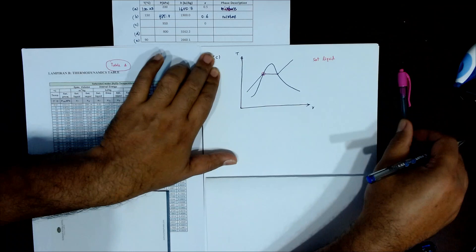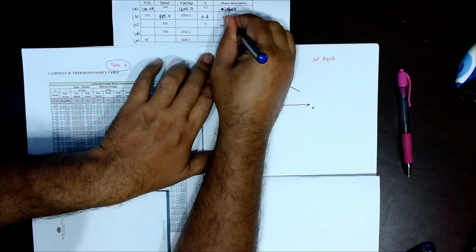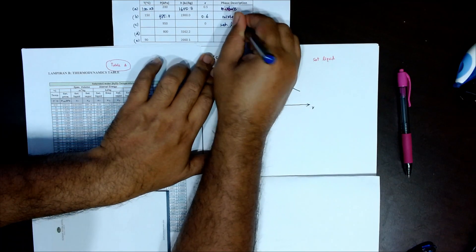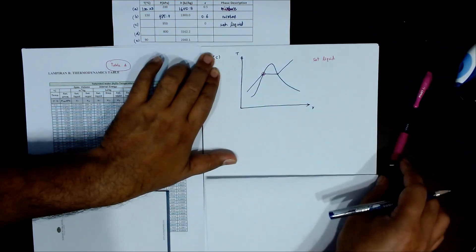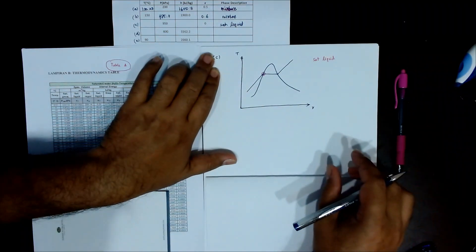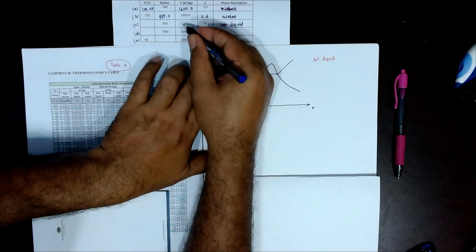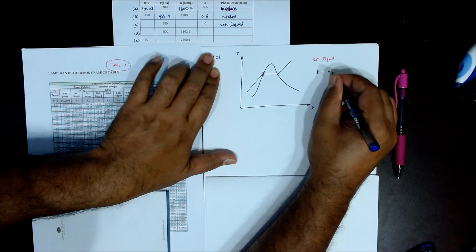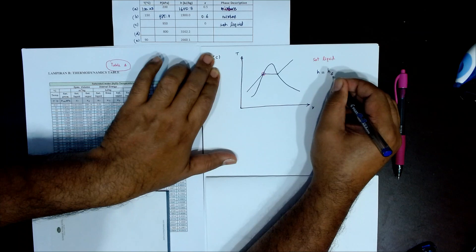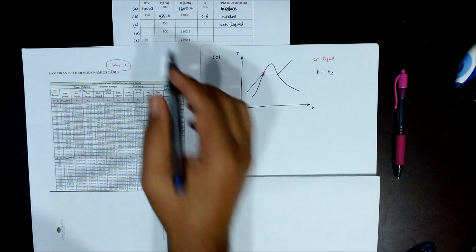Saturated liquid means that H is equivalent to HF. F is saturated liquid, so we can simply read from the table.